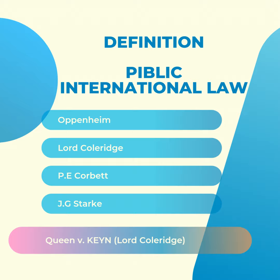When it comes to the definition of public international law, it was first coined by Bentham in the 1780s. The first authoritative definition came from Oppenheim, who said that the law of nations or international law is the name for the body of customary and treaty rules which are considered legally binding by civilized states in their intercourse with each other. The criticism of Oppenheim's definition is that it should not only cover states but should also include international organizations.